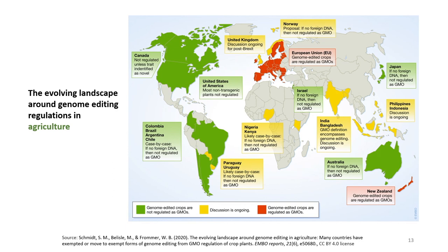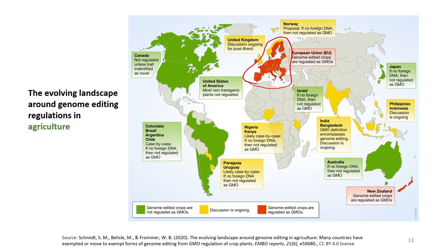In Canada, regulation is not required unless the trait is identified as novel. In the United States of America, most non-transgenic plants are not regulated. There are other countries shown in yellow where discussions are ongoing, including India and Bangladesh. The GMO definition encompasses genome editing in India's case, and discussion was ongoing at the time of publication of this map in 2020. In contrast, a block of countries in Europe are marked in red, where genome-edited crops are regulated as genetically modified organisms.